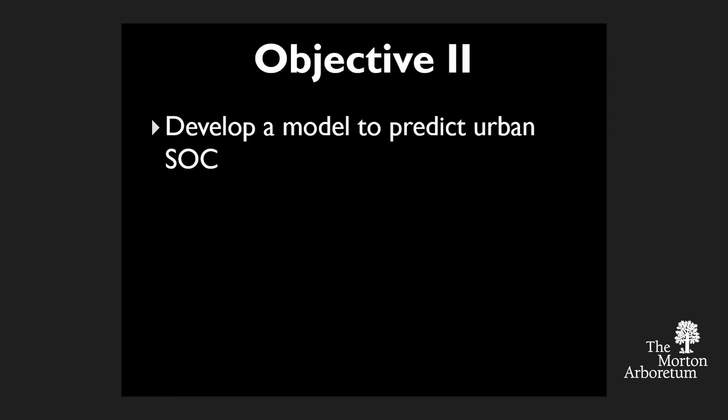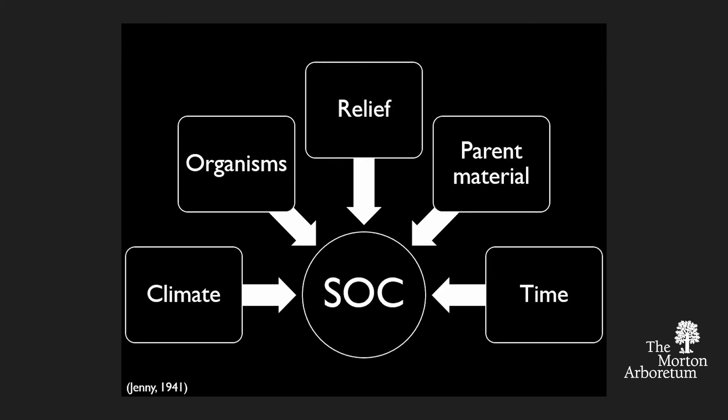The second major objective was to take data collected in Chicago and build a model applicable to other cities and regions. We're using Hans Jenny's state factor model of how soils form — through the interaction of climate, organisms, relief, parent material, and time — and applying it to the urban soil organic carbon pool to predict carbon storage. We have factors giving us an index on climate, organisms such as tree cover, relief, parent material, and time.